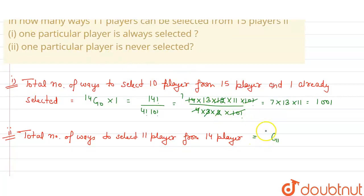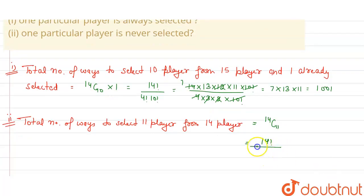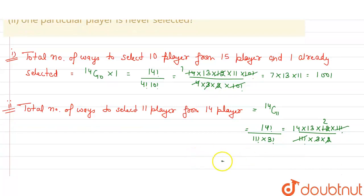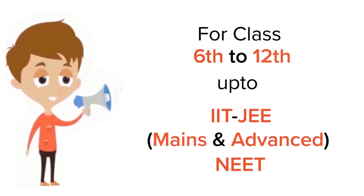This equals 14C11. Now 14C11 equals 14 factorial divided by 11 factorial into 3 factorial, which is 14 × 13 × 12 × 11 factorial divided by 11 factorial × 3 × 2. The 11 factorials cancel, and 6 cancels with 12, giving 14 × 13 × 2, which equals 364 ways. So the answer to the second question is 364 ways, and the first is 1001.